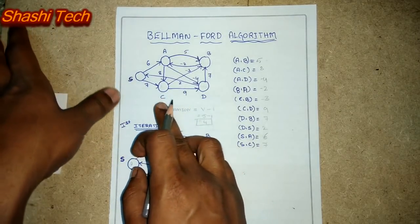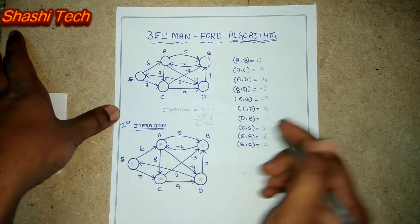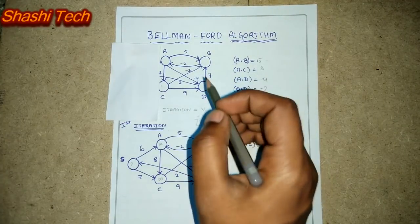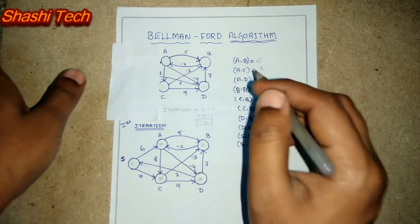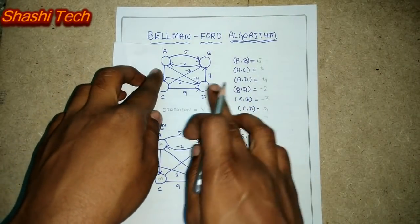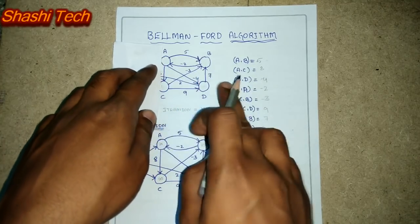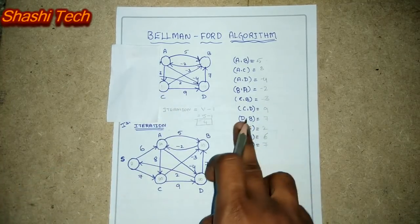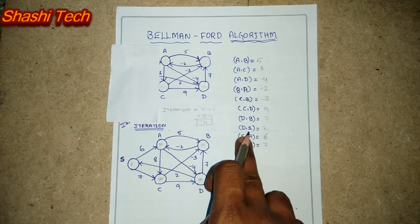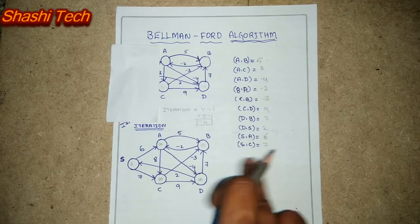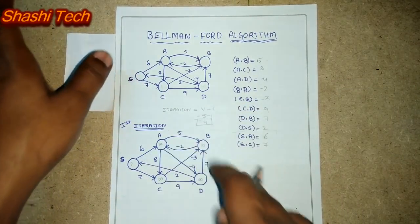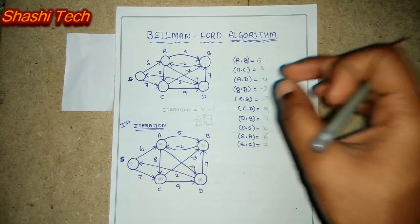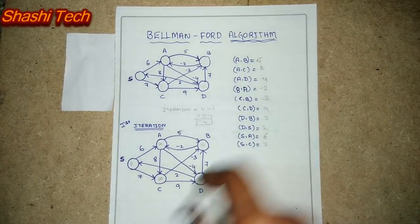The paths which are connected to the source vertex should be written at the last when you are going to write down the path weights. I have considered A, B, C, D now at first stage, named in alphabetical order. From A to B it is 5. From A to C it is 8. From A to D it is minus 4. From B to A it is minus 2. From C to B it is minus 3. From C to D it is 9. From D to B it is 7. From D to S it is 2. From S to A it is 6. From S to C it is 7. I am mentioning the paths connected to the source at the last — it will be helpful for the iteration. If you write paths connected to the source at the beginning, you will face problems during iteration. Writing them at the last makes the iteration easier.